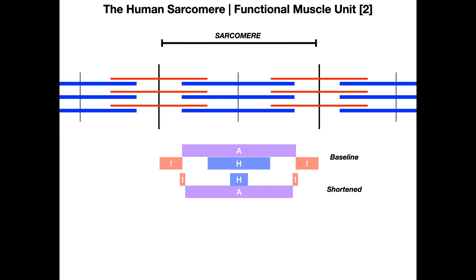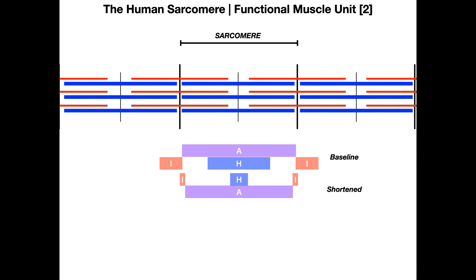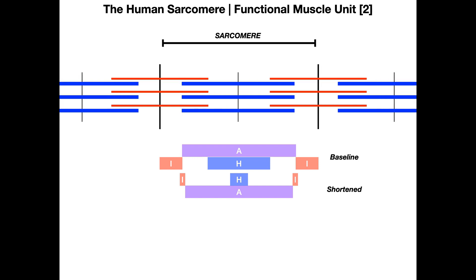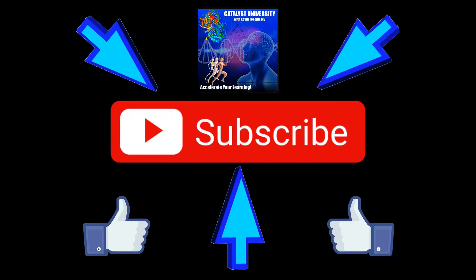The key things to remember: the A-band doesn't change size; the H-zone and I-band decrease in size during shortening. Make sure you know your relevant anatomy — titin, the Z-disc, the M-line, actin, myosin, and the thin and thick filaments. Please like this video and subscribe to the channel for future videos and notifications.